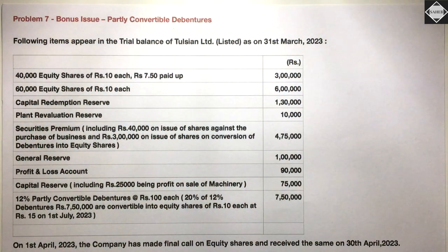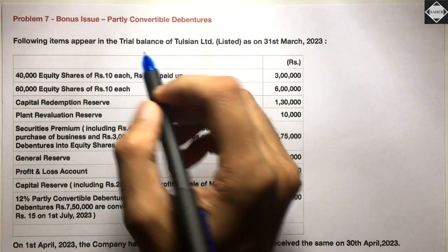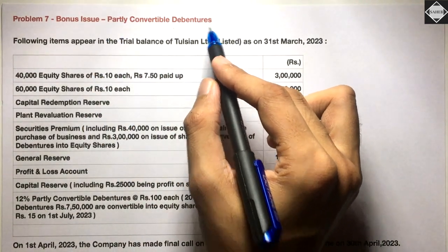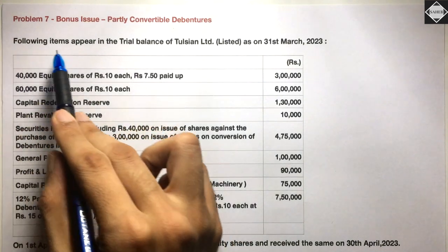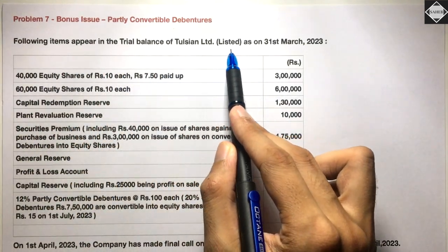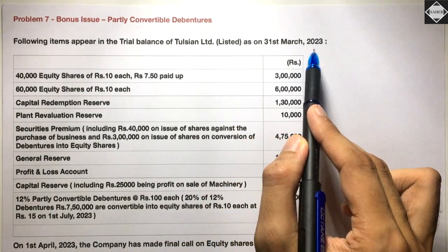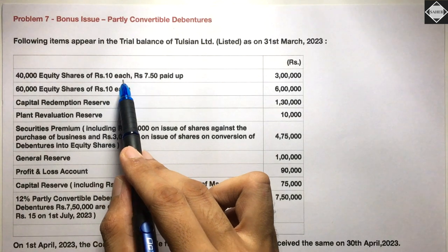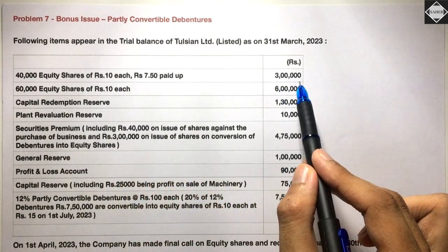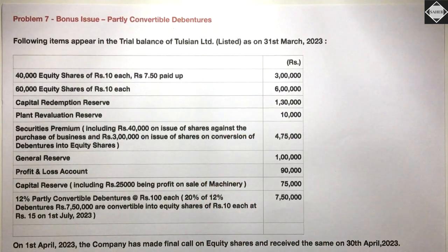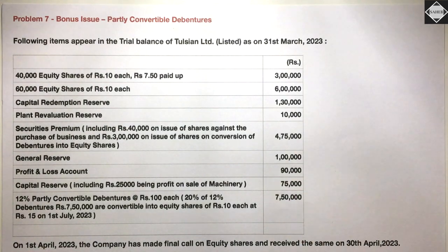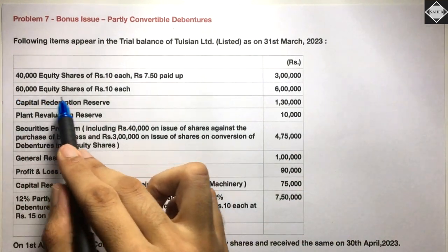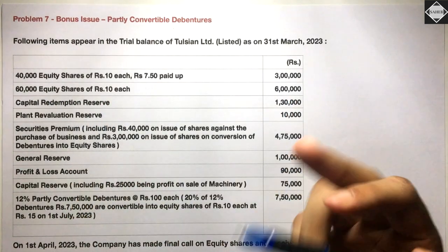Now let's move on to our seventh problem. The main topic here is partly convertible debentures. Following items appear in the trial balance of Tulsi Limited (listed) as on 31st March 2023: 40,000 equity shares of Rs.10 each, Rs.7.5 paid up — Rs.3 lakh; and 60,000 equity shares of Rs.10 each — Rs.6 lakh. So we have two different classes of equity shares, including partly paid up shares which need to be made fully paid up before issuing bonus shares.